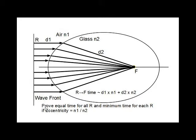We are going to prove that both conditions can be met by an ellipse whose eccentricity is equal to the ratio of N1 over N2, in which case the trailing ellipse focus point is the lens focus.